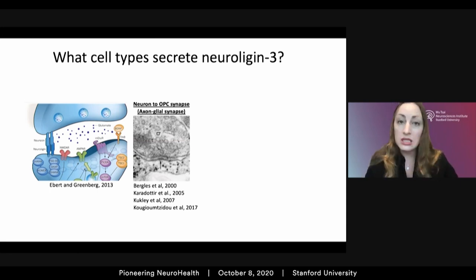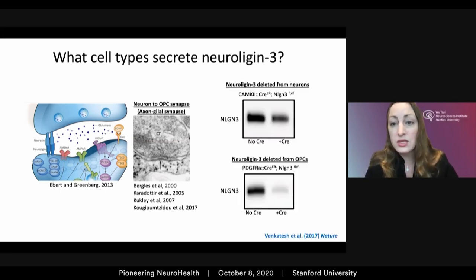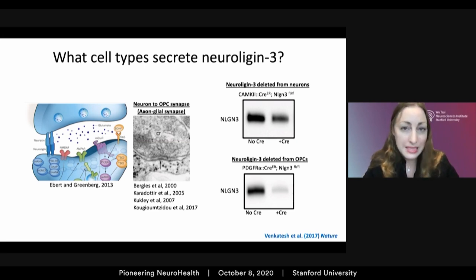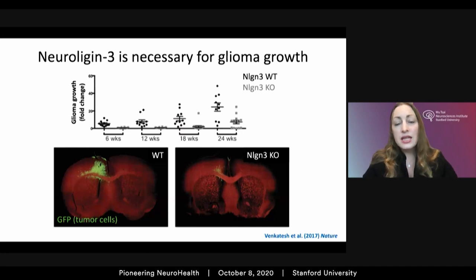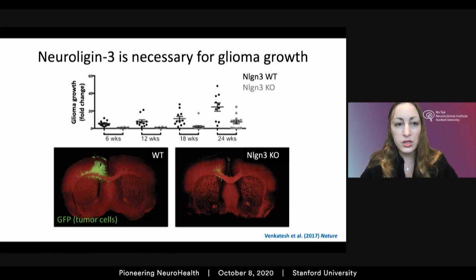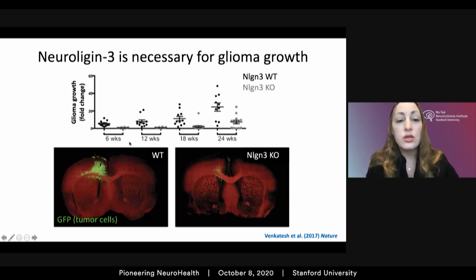We tested the idea that not only neurons but also OPCs may contribute to the activity-regulated secreted pool of Neuroligin-3, by conditionally deleting Neuroligin-3 from various cell types. We found that not only neurons but importantly OPCs contribute to this pool of shed Neuroligin-3. This places the OPC in the tumor microenvironment for the first time and begs important basic questions about the role Neuroligin-3 may play in normal myelin biology.